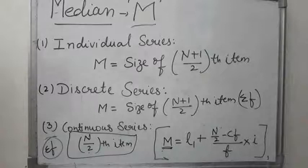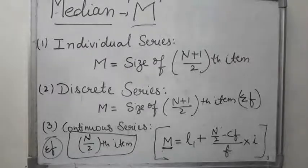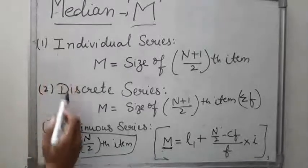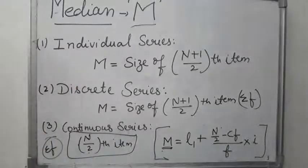First, we arrange the series in ascending order or descending order and then we calculate the median. As we all know, there are three series and we calculate the median according to all three: individual series, discrete series, and continuous series. First of all, we will calculate the median in the individual series.